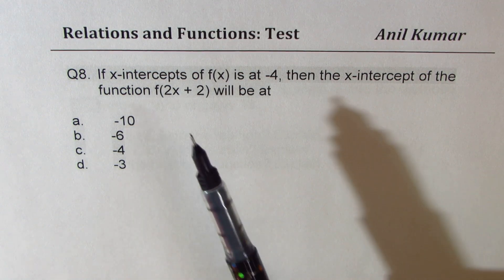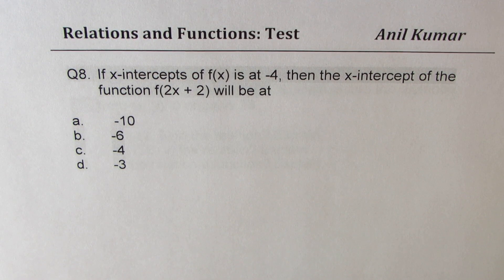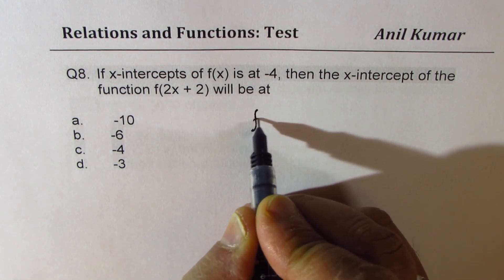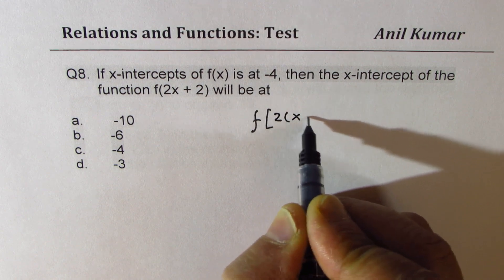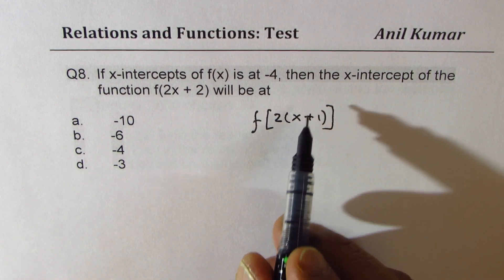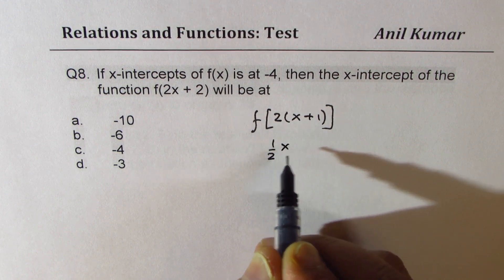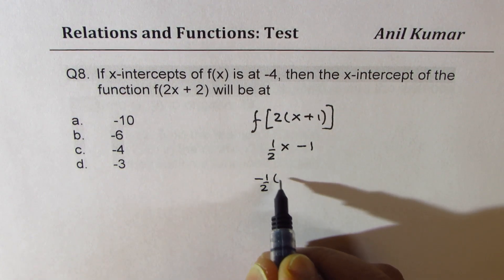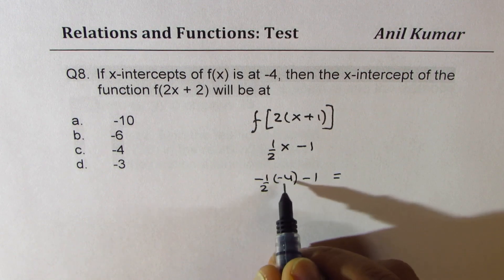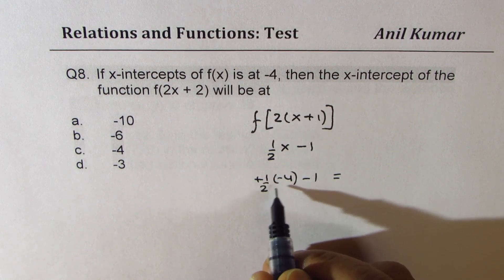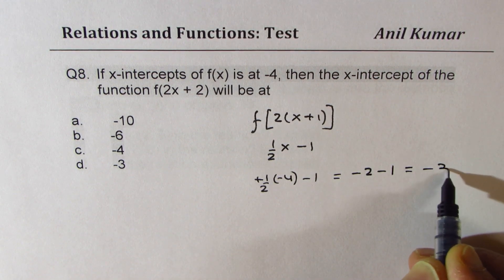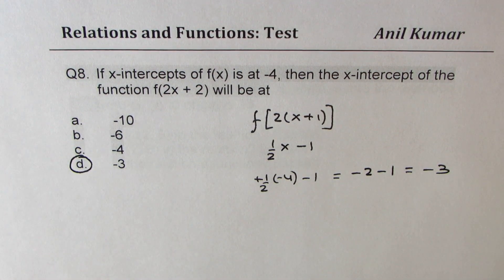Question number eight: if the x-intercept of f(x) is at -4, find the x-intercept of f(2x + 2). Factor out 2: f(2(x + 1)). This means halve the x-value and shift left by 1. Half of -4 is -2, then subtract 1 to get -3. So option D (-3) is the correct answer.